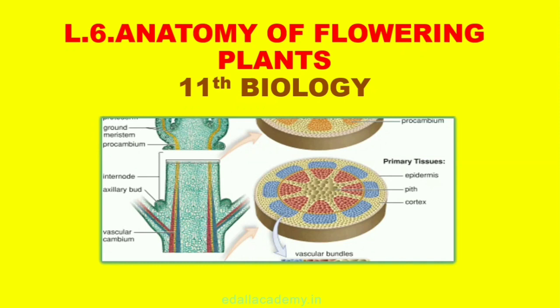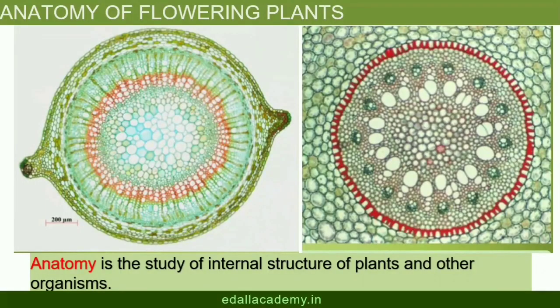You can very easily see the structural similarities and variations in the external morphology of larger living organisms, both plants and animals. Similarly, if we were to study the internal structure, one also finds several similarities as well as differences. This chapter introduces you to the internal structure and functional organization of higher plants.